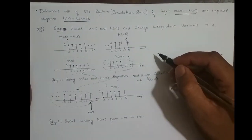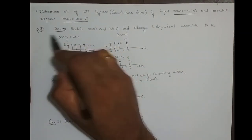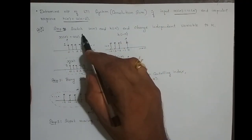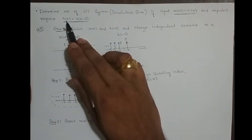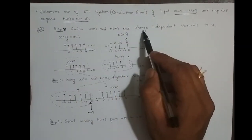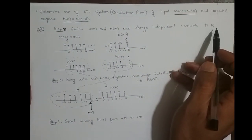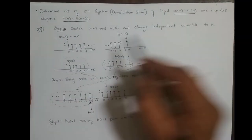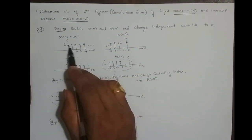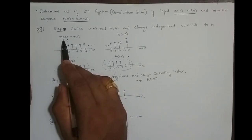I have done some initial work to save time in the video. We will go step by step. In Step 1, we sketch x(n) and h(-n), and change the independent variable to k. x(n) is u(n), the unit step function, which varies from n=0 to infinity with amplitude 1. This is the unit step function as the input sequence x(n).